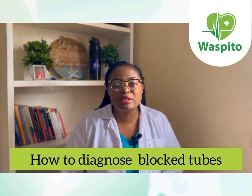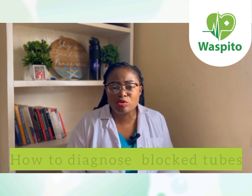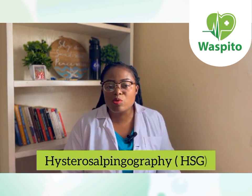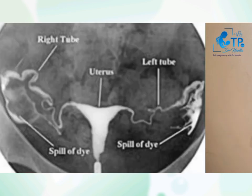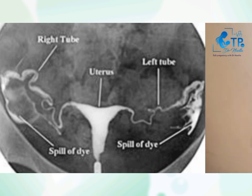How can you diagnose blocked tubes? There are various methods. Using a special X-ray called hysterosalpingography — that's HSG — a dye is sent through the vagina into the woman's womb and through the fallopian tube. As the dye is going through, a series of X-rays are taken. If the dye passes through the tubes, it means the tubes are patent. If it doesn't pass, it tells you where the blockage is found and whether it is partial or complete.